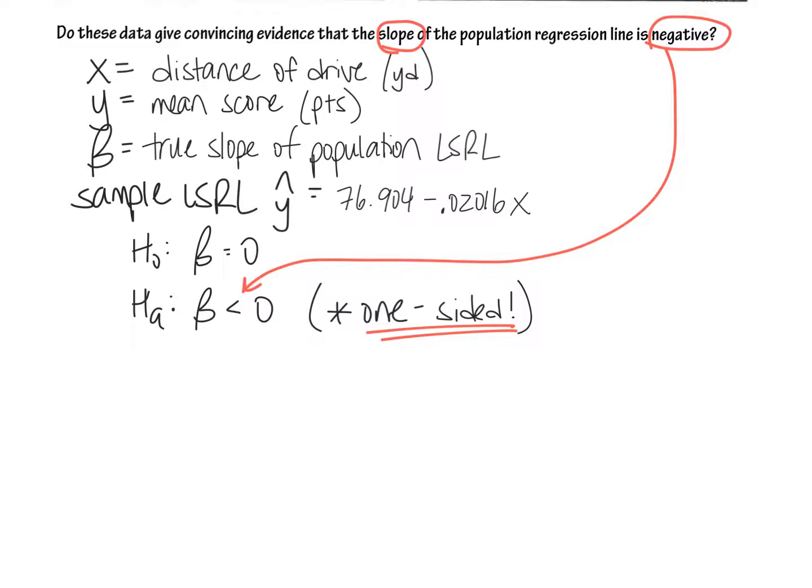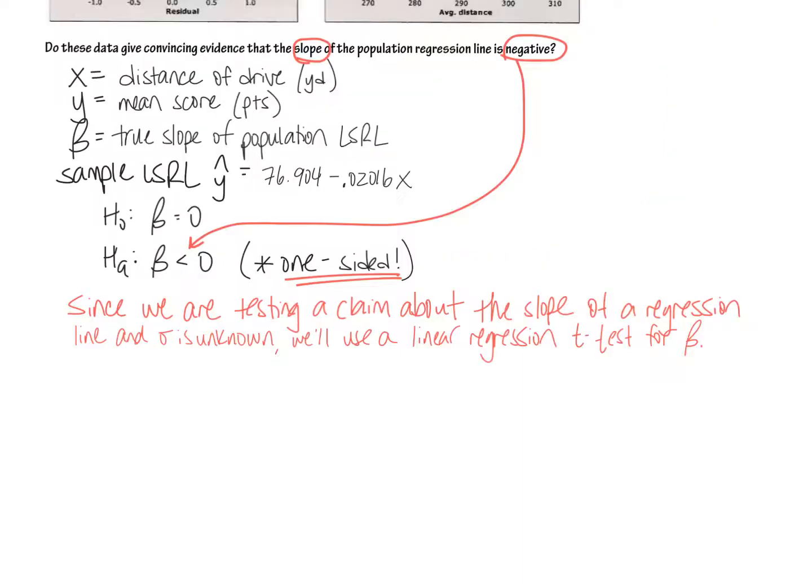I'm also going to write out what kind of a test I'm going to do and why. Since we're testing a claim about the slope of a regression line, and the key part here, sigma is unknown. Remember, what we need to have here is that if sigma is unknown, that's why we're using a t-test. Well, how do we know sigma is unknown? Because we have an SRS of 19. There's only 19 dots up here. We only have a sample. Therefore, we do not have data on every single golfer. Therefore, we cannot understand what the population sigma itself is.